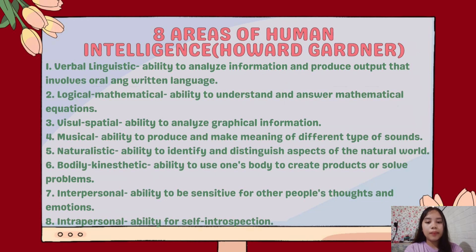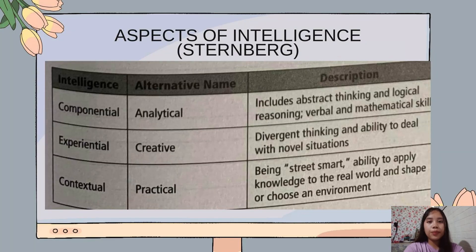First, verbal-linguistic: the ability to analyze information and produce output that involves oral and written language. Second, logical-mathematical: the ability to understand and answer mathematical questions. Third, visual-spatial: the ability to analyze graphical information. Fourth, musical: the ability to produce and make meaning from different types of sound. Fifth, naturalistic: the ability to identify and distinguish aspects of the natural world. Sixth, bodily-kinesthetic: the ability to use one's body to create products or solve problems. Seventh, interpersonal: the ability to be sensitive to other people's thoughts and emotions. Eighth, intrapersonal: the ability for self-introspection.